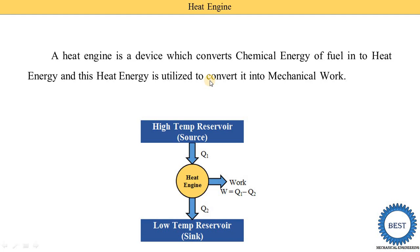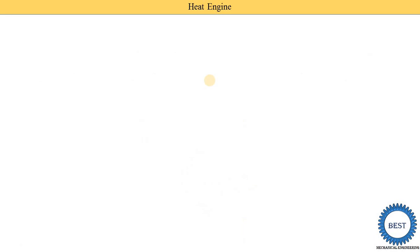For nuclear power plants, we use uranium or plutonium as the chemical source. In nuclear power plants, fission and fusion reactions occur, releasing heat energy. This heat energy is absorbed by water or some intermediary medium, then supplied to a turbine, and the turbine produces mechanical work. So petrol engines, diesel engines, Rankine cycles, Brayton cycles, and nuclear power plants are all examples of heat engines.